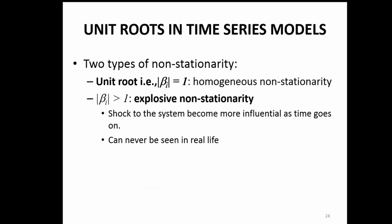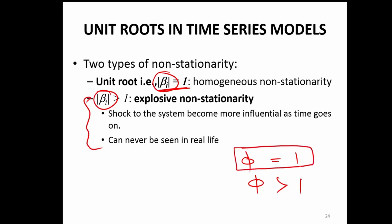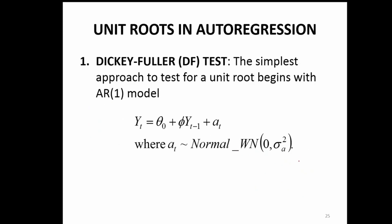There are two types of non-stationarity: one case where phi equals 1, and the other where phi is greater than 1 — the second case we will ignore here. We would like to see when phi equals 1. That we can find out using the Dickey-Fuller test — a test using which we can find out whether there is presence of unit root, or in other words, whether it is a random walk series or not.